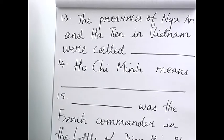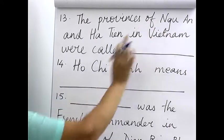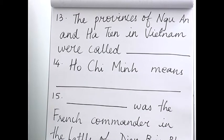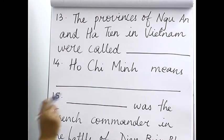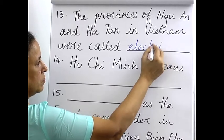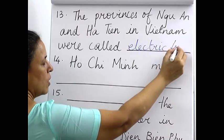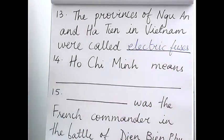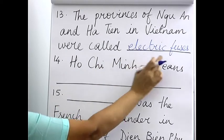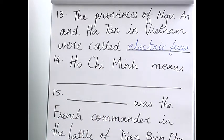Thirteenth: the provinces of Nghe An — the N is not pronounced — and Ha Tien in Vietnam were called the electric fuses. Why? Because anytime there would be a spark and there would be one big explosion. That is why they were known as electric fuses.